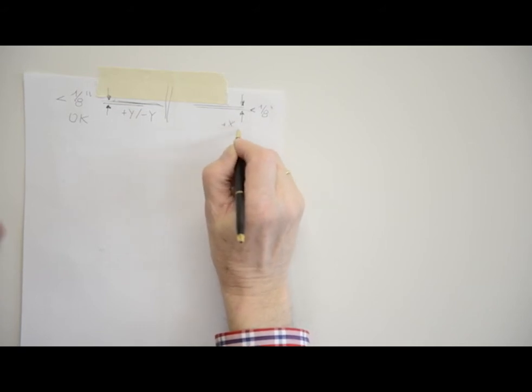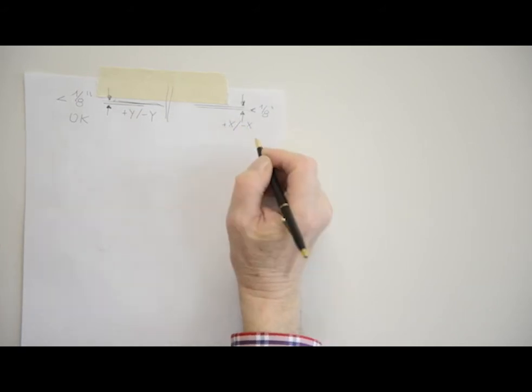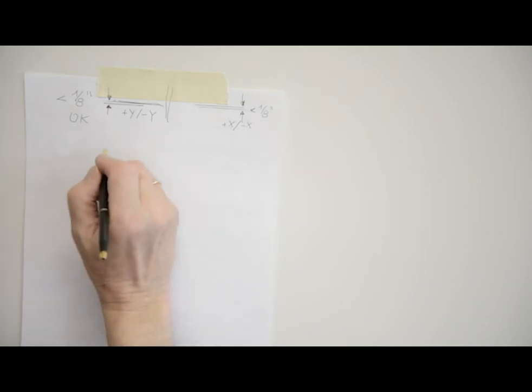Check the difference between the two X axis marks. If they differ more than the published accuracy for this laser, 1/8 of an inch or 3 millimeters for the LL300S, the laser needs calibrating on the X axis.